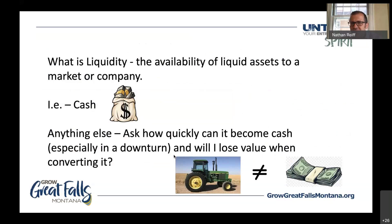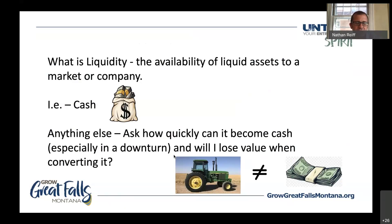Liquidity is your available liquid assets — basically, this is cash. Some things we sort of think of as liquid, but especially in a downturn, we need to consider how much value they can have. A tractor is not the same as cash; I can't automatically sell it, especially in a downturn — I may have to lose some money. So we want to make sure you have the liquidity you need, especially should this go on and banks become tight in their lending practices. The government has done a lot to keep this from happening, but if it does, you want to make sure you have the cash you need when you need it.